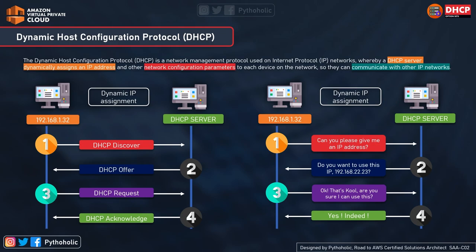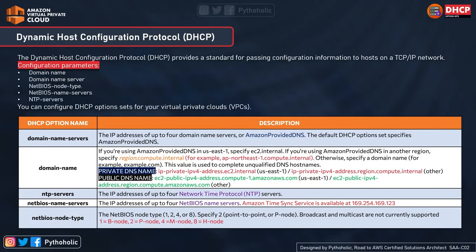Now let's talk about AWS DHCP option sets. DHCP provides a standard for passing configuration information to hosts on a TCP/IP network. The configuration parameters provided by the DHCP server include domain name, domain name server, NetBIOS node type, NetBIOS name servers, and NTP servers. You can configure DHCP option sets for your VPC; by default one is configured when you create a VPC, but you can also create your own.